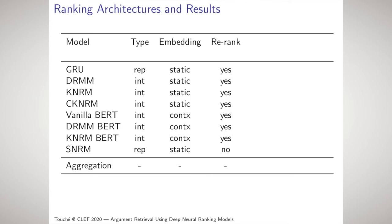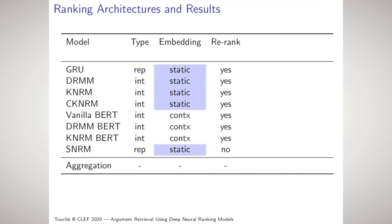Based on this training procedure, we compare eight different ranking architectures focusing on three key characteristics: interaction-focused versus representation-focused networks, static versus contextual embeddings, and re-ranking an initial BM25 result set versus an end-to-end approach.